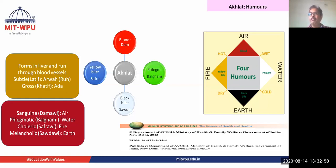As every element has basic qualities, air is hot and wet, so blood is hot and wet. Water is wet and cold, so phlegm is wet and cold. Earth is dry and cold, so black bile is dry and cold. Yellow bile represents fire, which is hot and dry.